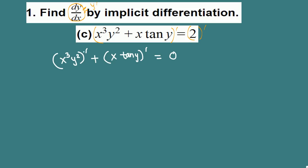In the first term we have a product of two functions, so we need to use the product rule. Using the product rule: derivative of x cubed is 3x squared times the second factor y squared, plus derivative of y squared which is 2y times y prime, multiplied by the first factor.